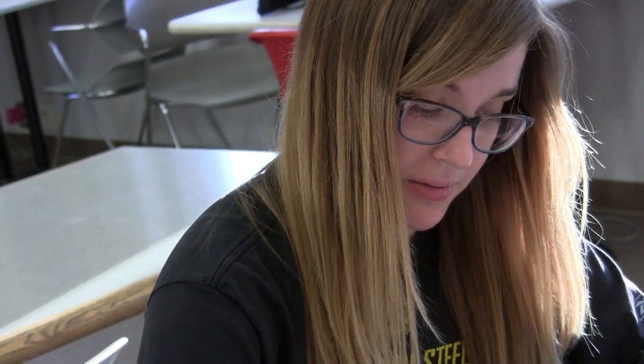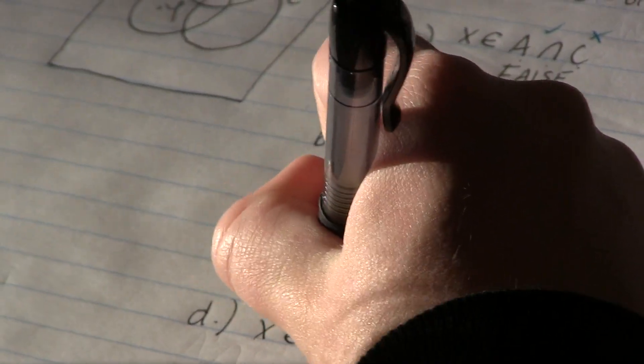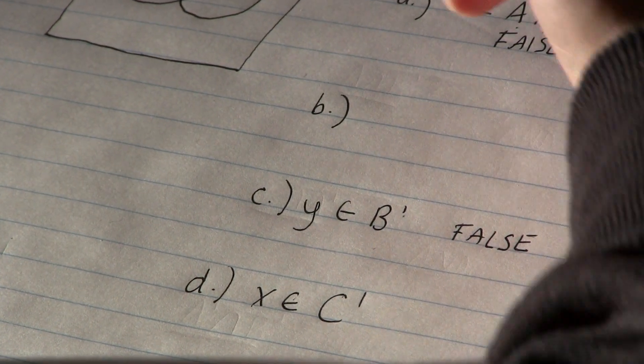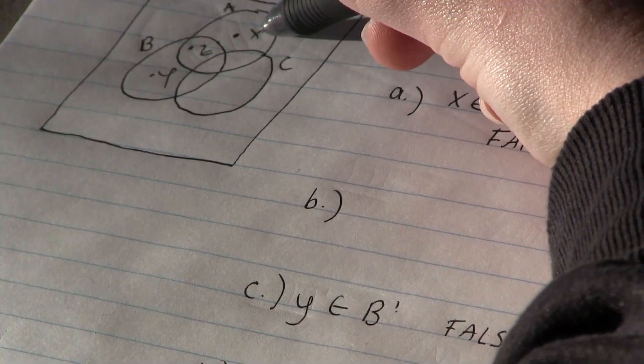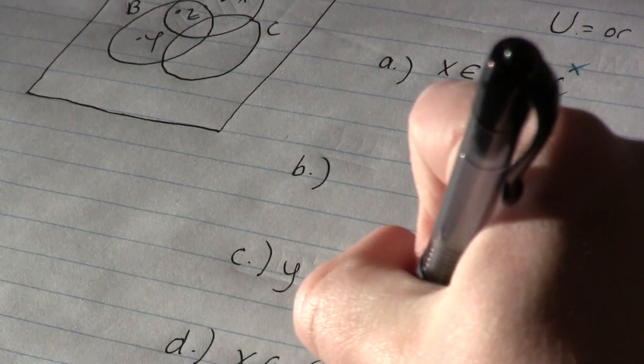Good. Good. Okay, let's do D next. D says X lives in C complement. So X lives outside of C. X does live outside of C. Okay, true. That's good because I was getting too many falses.